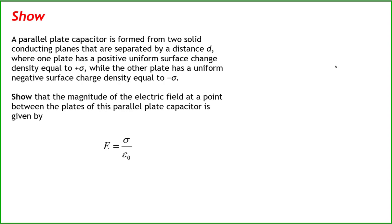A parallel plate capacitor is formed from two solid conducting planes separated by distance d, where one plate has a positive uniform surface charge density equal to positive sigma, while the other plate has a uniform negative surface charge density equal to negative sigma. Show that the magnitude of the electric field at a point between the plates is given by sigma divided by the permittivity of free space, epsilon naught.